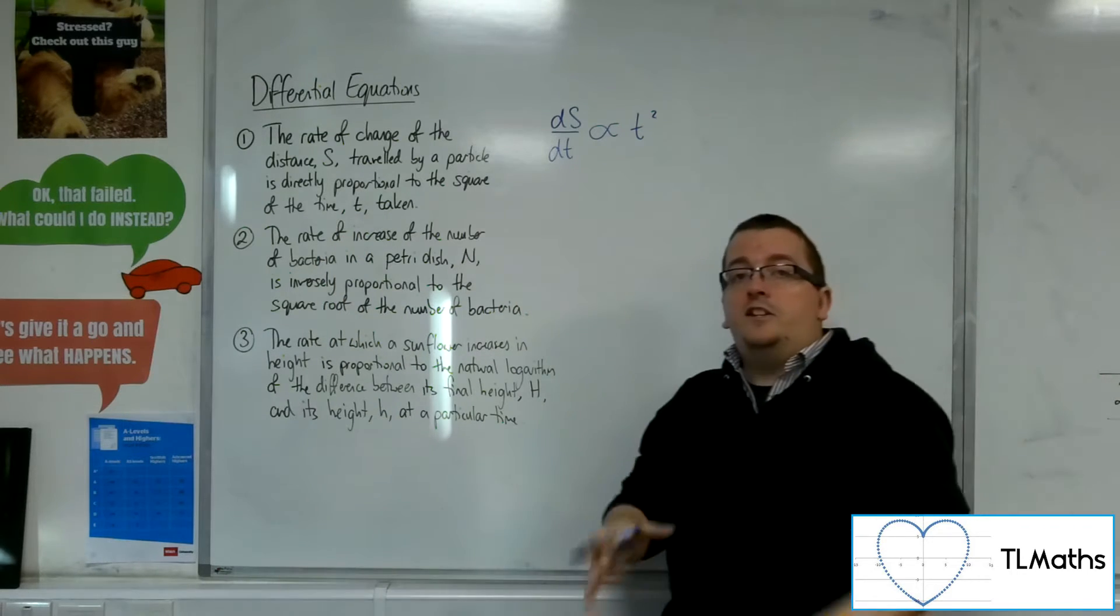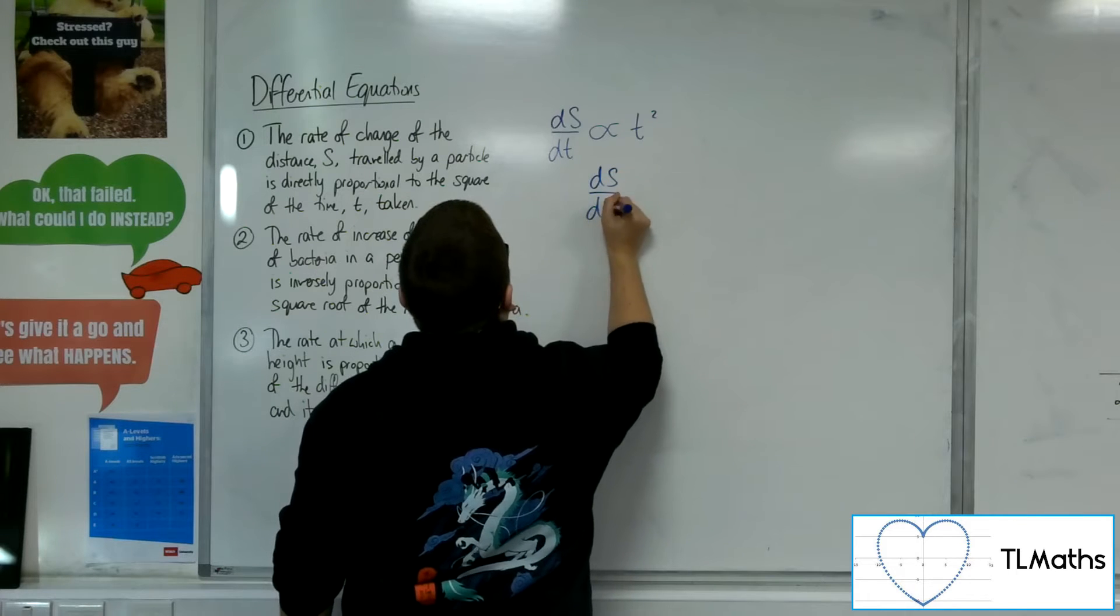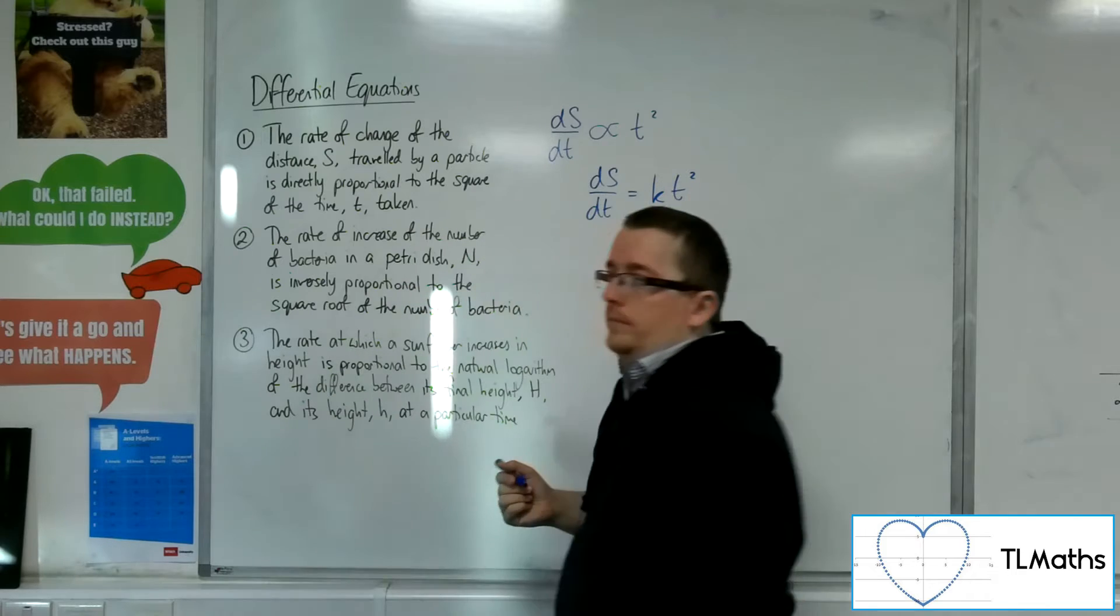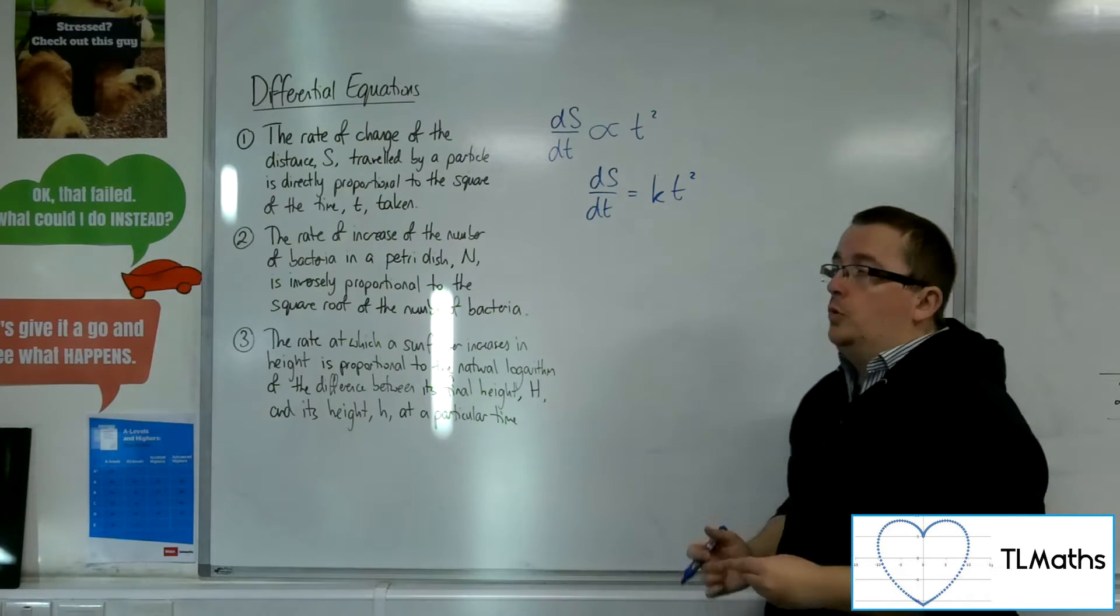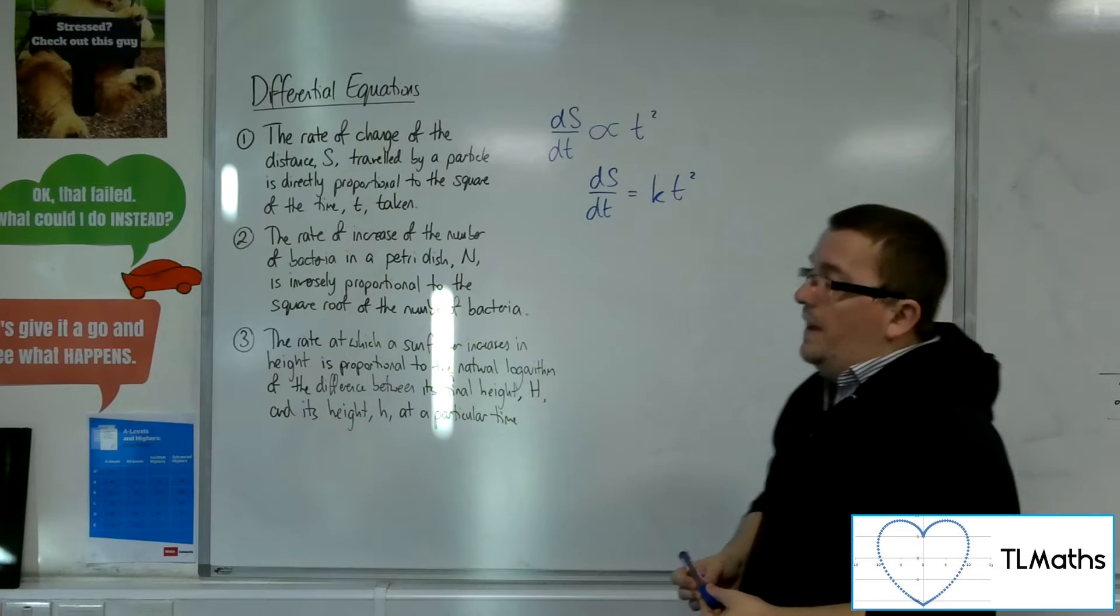So if we're saying that it's directly proportional to t squared, then ds by dt will be equal to k t squared. That is the differential equation I would then need to solve. So that's number one.